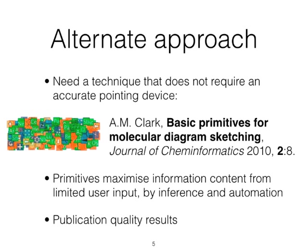We have to come up with a way to get around this limitation. One approach is to consider all of the drawing operations we need to accomplish in order to draw a presentation-quality 2D structure diagram quickly. If we sit down and give it some thought, it's actually possible to come up with a list of primitives that can achieve all of these functions without ever requiring the user to position anything on the screen accurately. I'm going to cover this in about four slides — a very brief overview of some pretty complex algorithms. This is all published in the literature: Journal of Cheminformatics, Volume 2, Article 8.